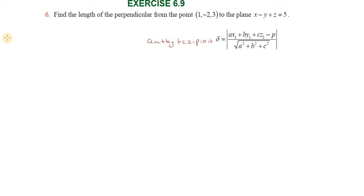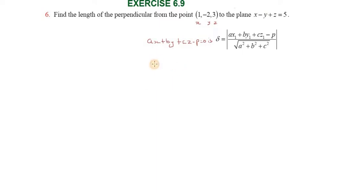Hi students, greetings from Success Education Academy. This is Exercise 6.9, Question Number 6: Find the length of the perpendicular from the point (1, -2, 3) to the plane x minus y plus z equals 5.